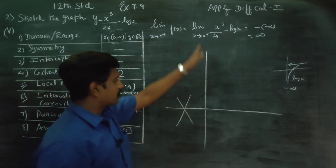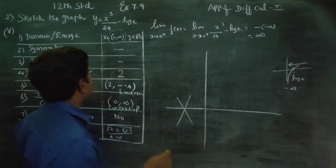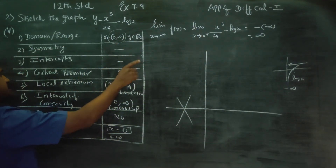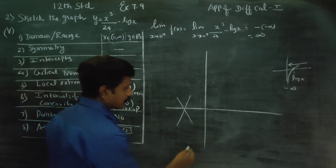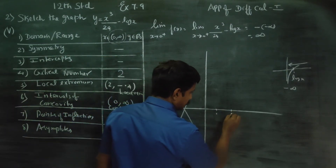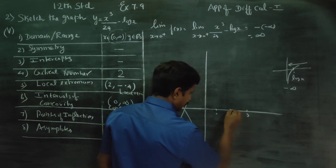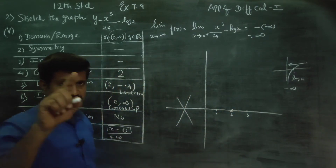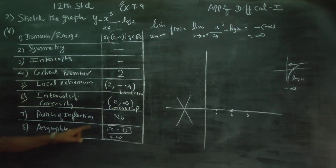Y is free on the real number line. Symmetry and intercept properties are not applicable here. The critical number is x equals 2, and this is where the curve bends — the local minimum.